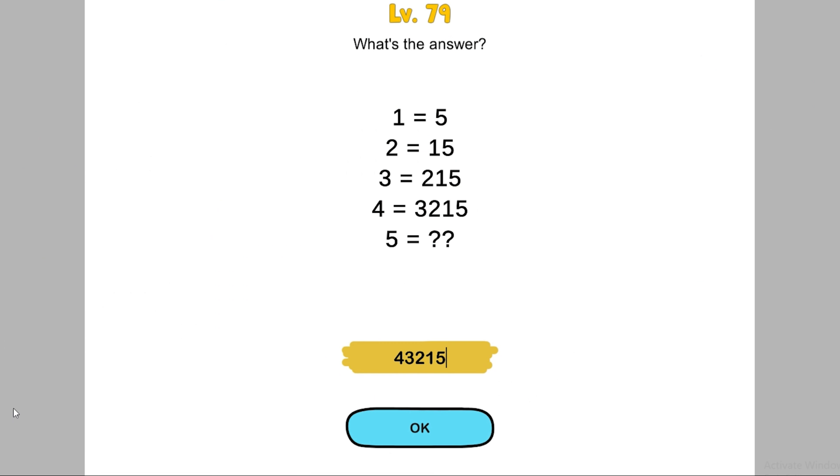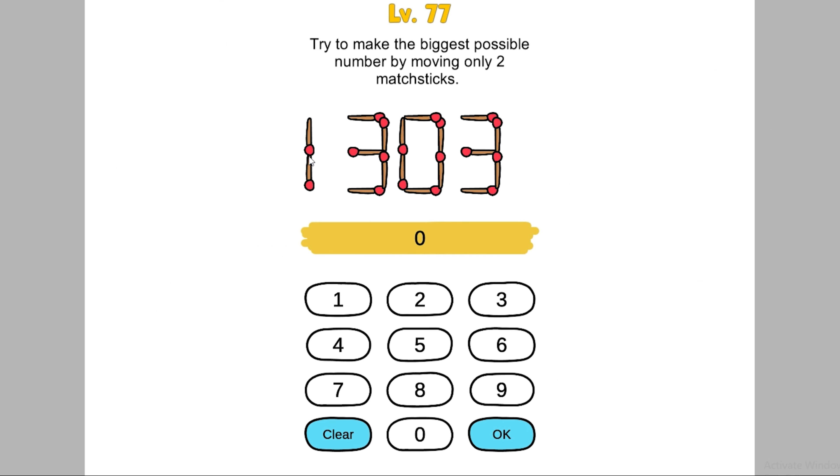Next question: we have to move two sticks to make a bigger number. And I know for sure that this is not a three-digit number. It must be four or five digit number. So what I have to do is move two sticks and make a four or five digit number. I can move this, this, this, or this, or this, or this.